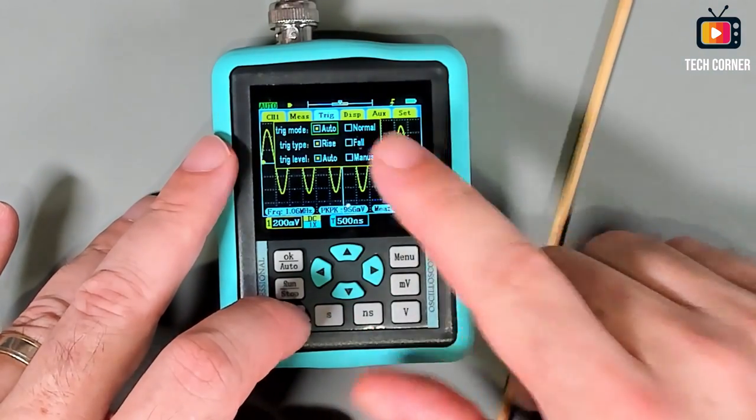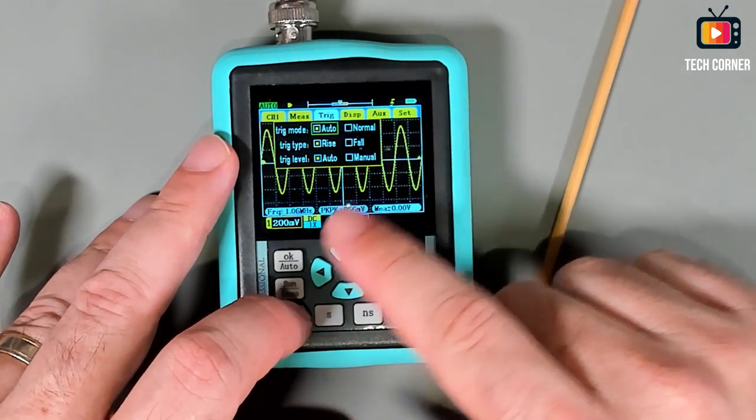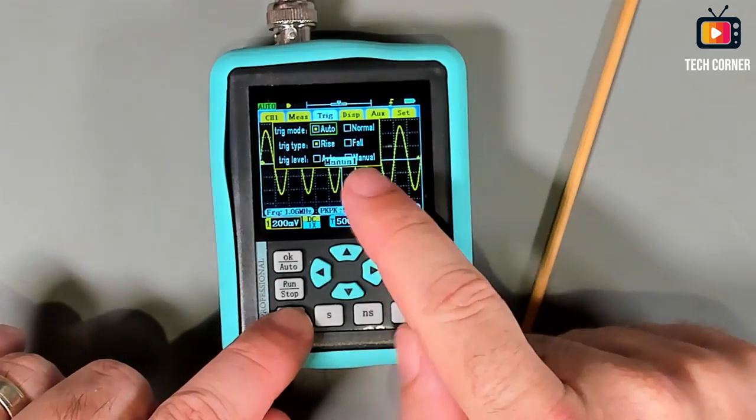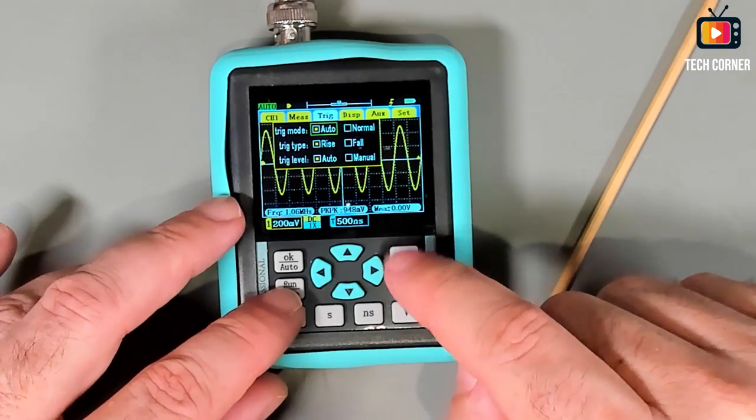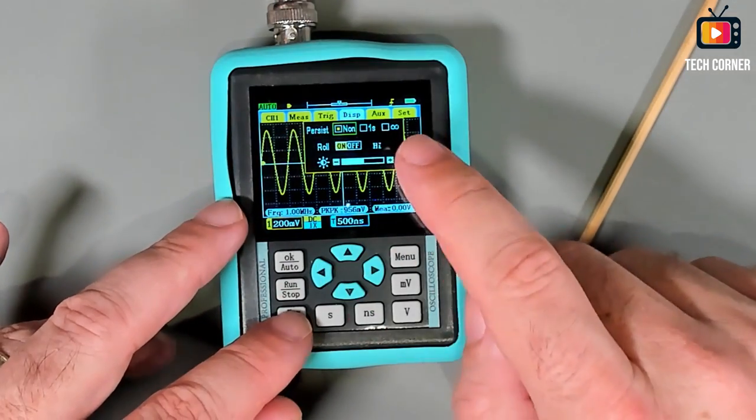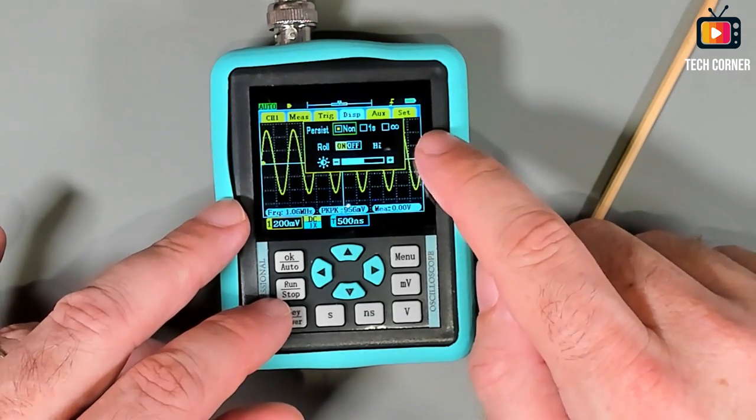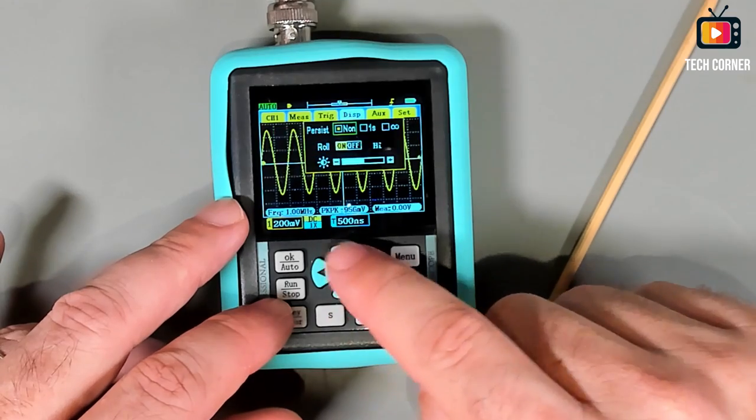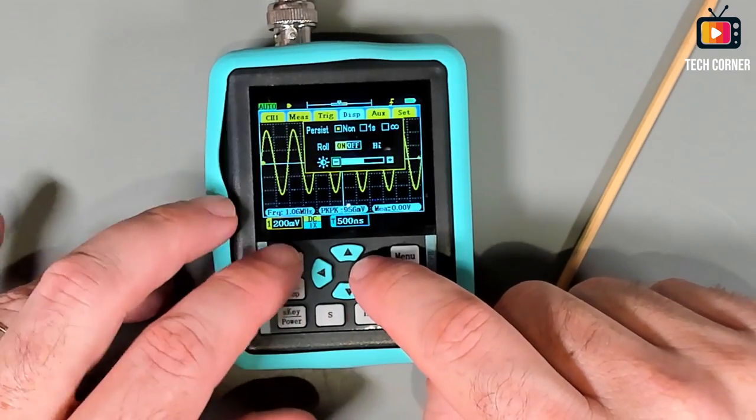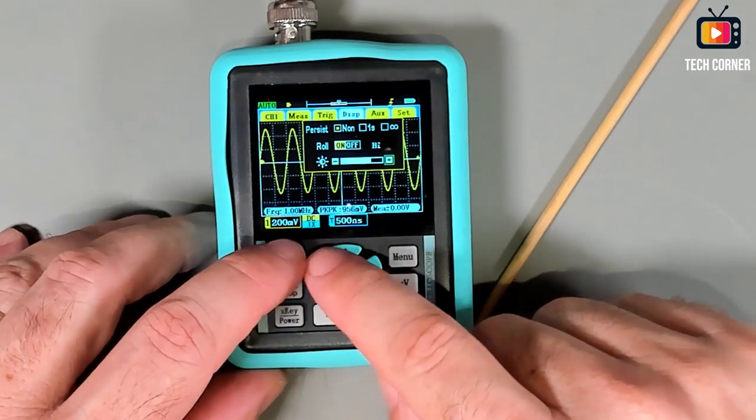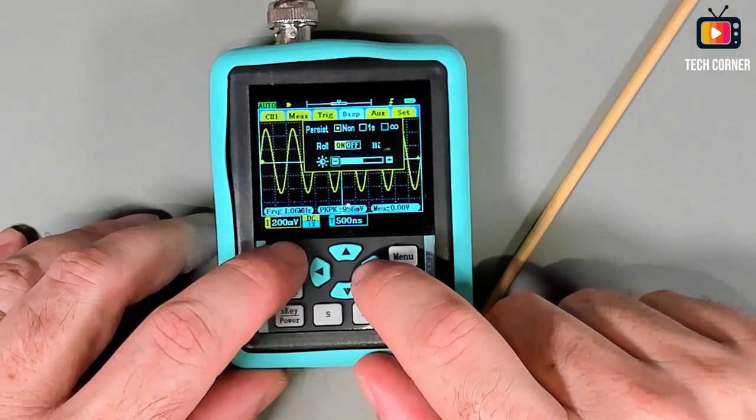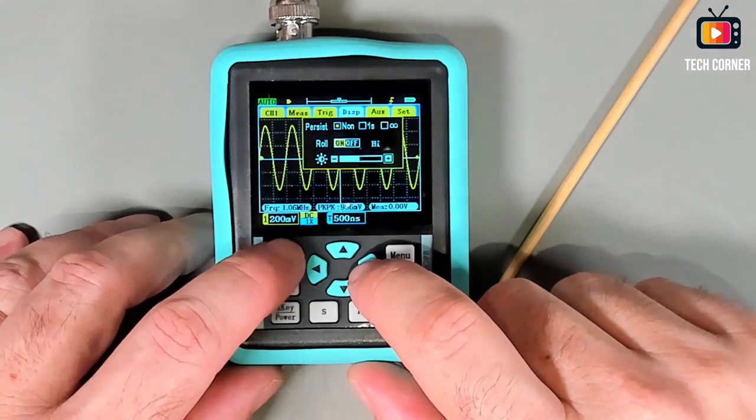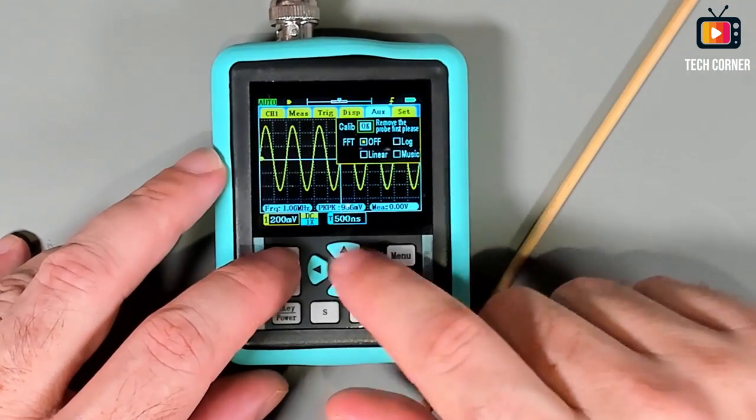We have here the trigger. We have trigger normal or auto, trigger type rise or fall, and also the trigger level auto and manual. You can select that with the keys. The next menu is the persist, it has persist also, one second or infinite. You have also to activate or not the roll mode, and you can select the brightness. You change it with the plus and minus signals.